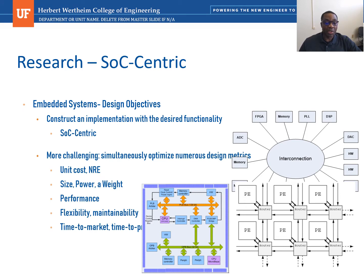Our goal is to optimize those types of systems, and optimization is always done with regard to a metric. The various metrics that we consider include unit cost, size, power and weight, performance, flexibility, manageability, and time to market. All those metrics cannot be optimized all at once — when you optimize one metric, it degrades the others. Considering all those metrics at once is a huge challenge in the design of this type of system.